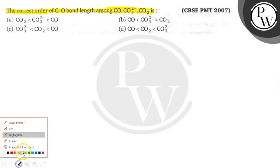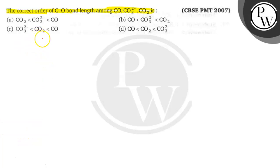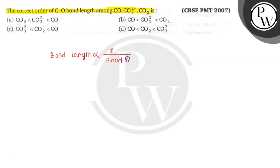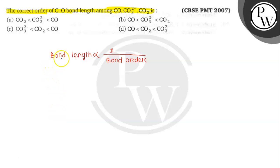Let's solve this question. We know that bond length is inversely proportional to bond order. So first we have to find out the order of bond length, which is inversely proportional to bond order, and we can easily find out the bond order. So first we will find out the bond order of CO, CO₂, and CO₃²⁻, then we will find out the order of bond length.